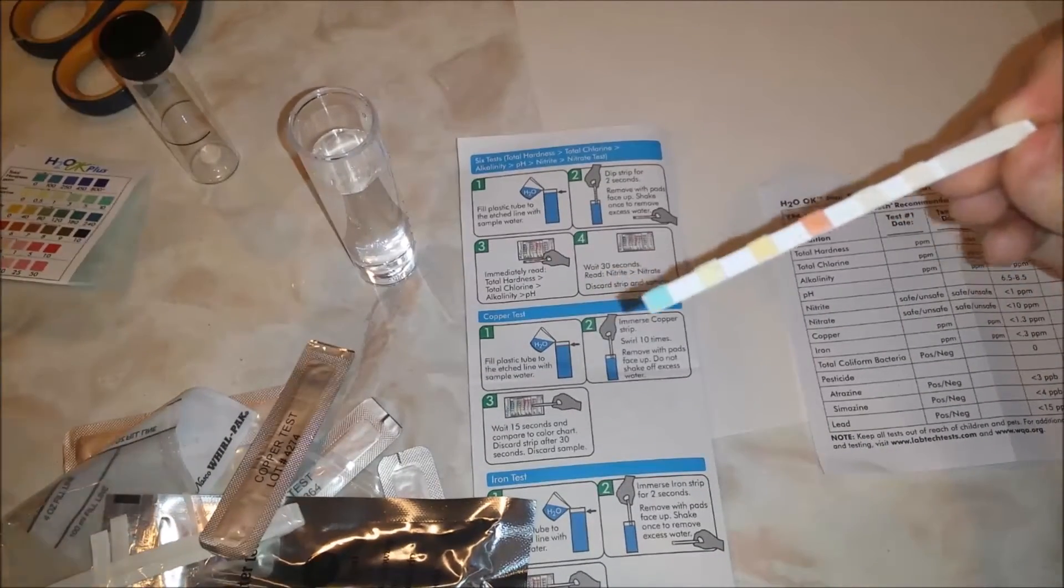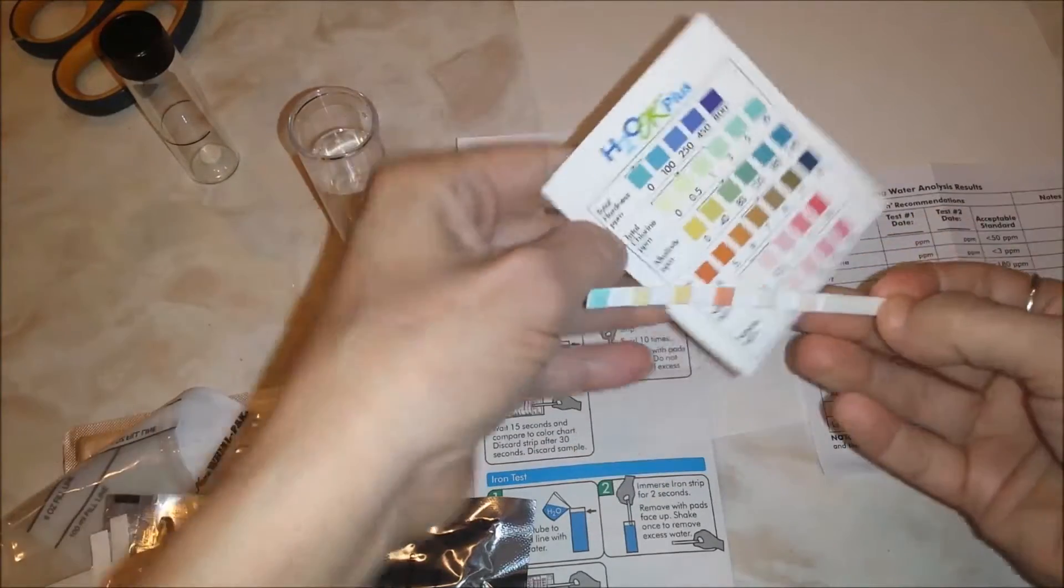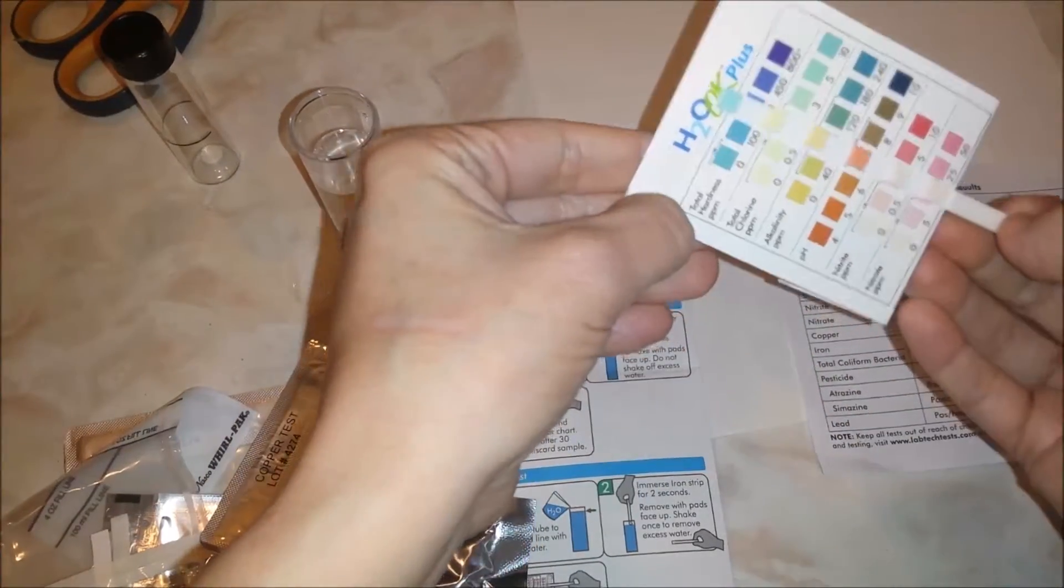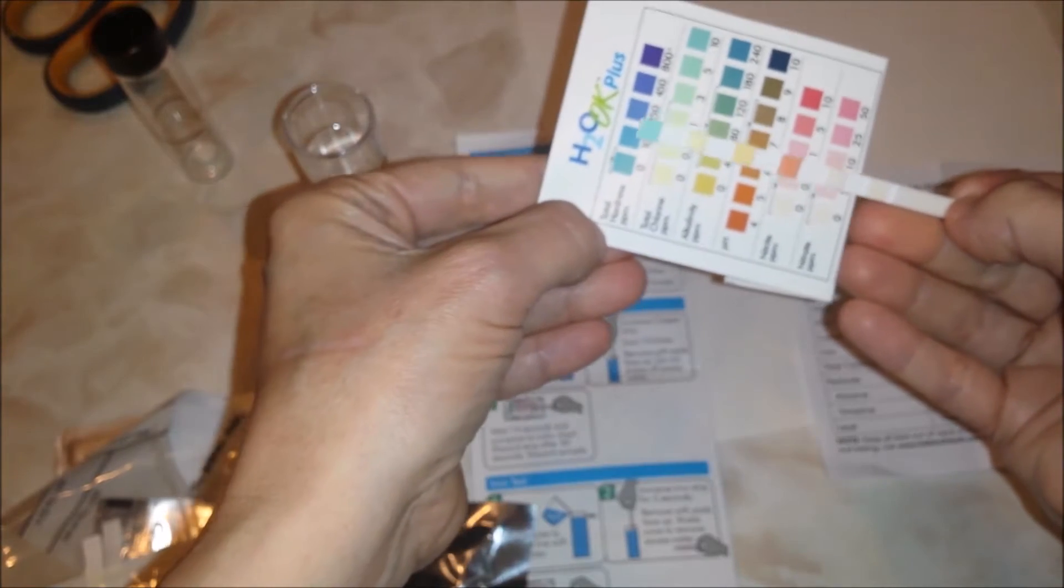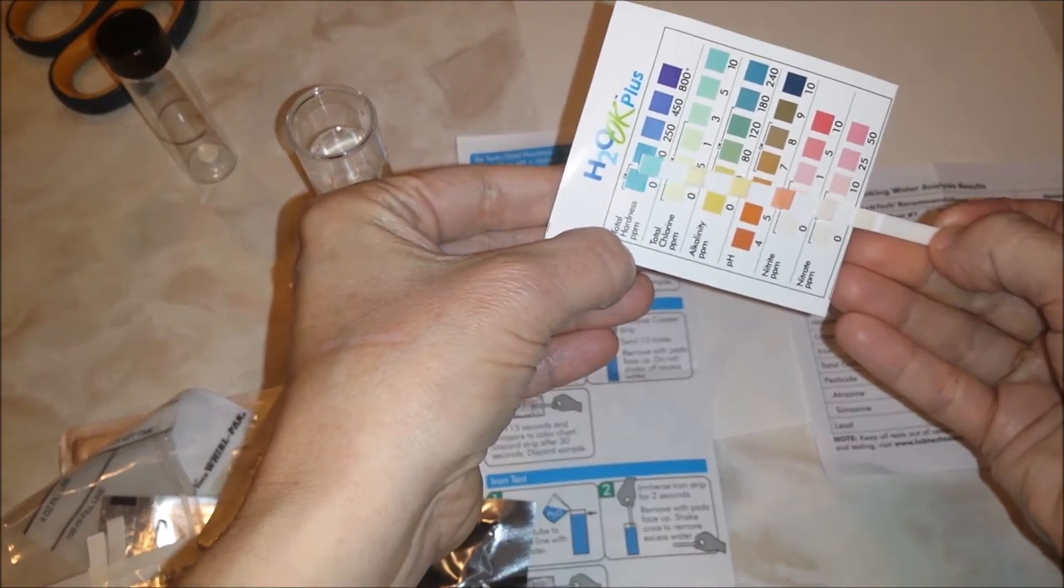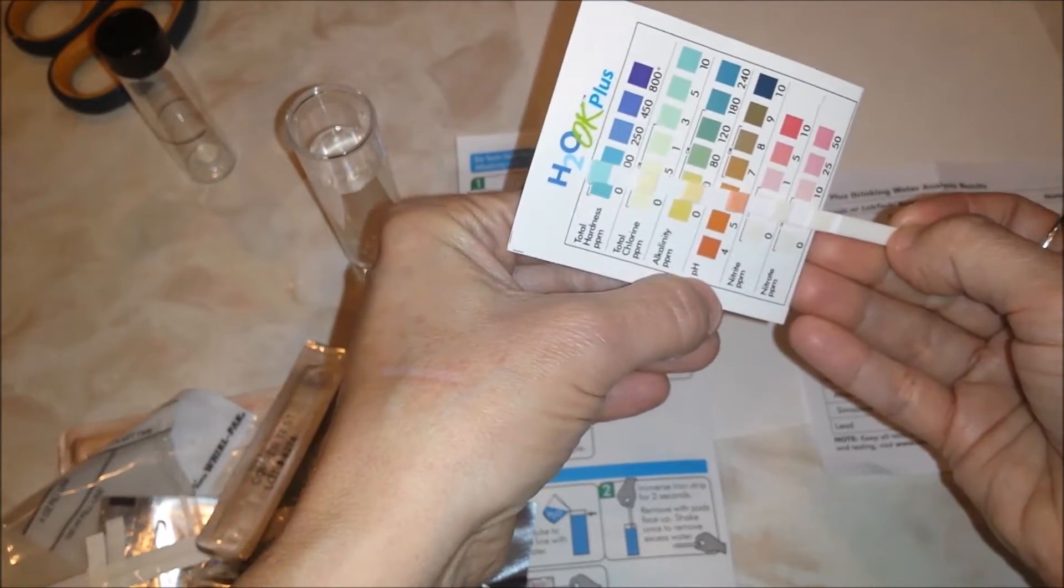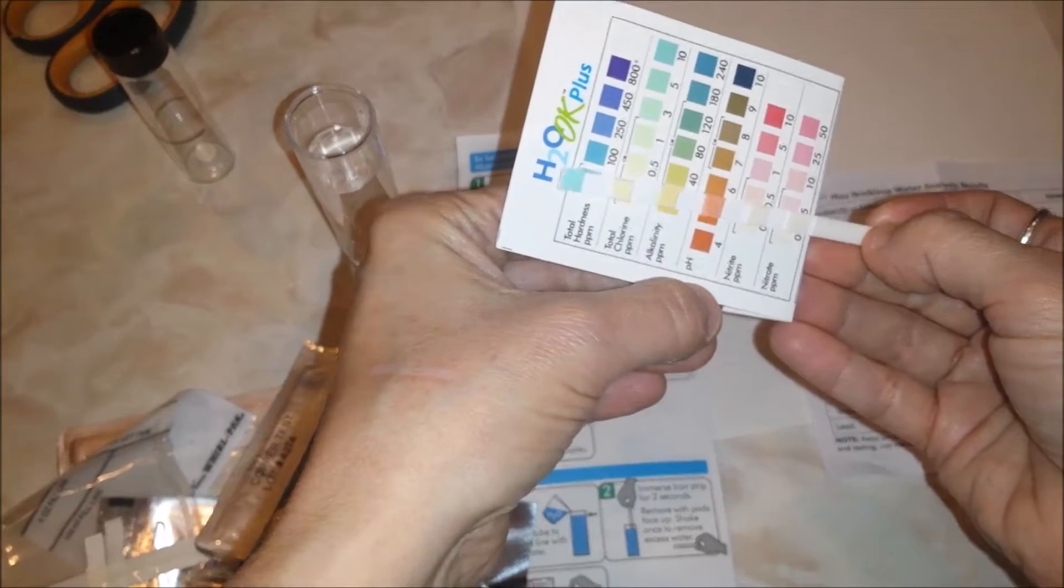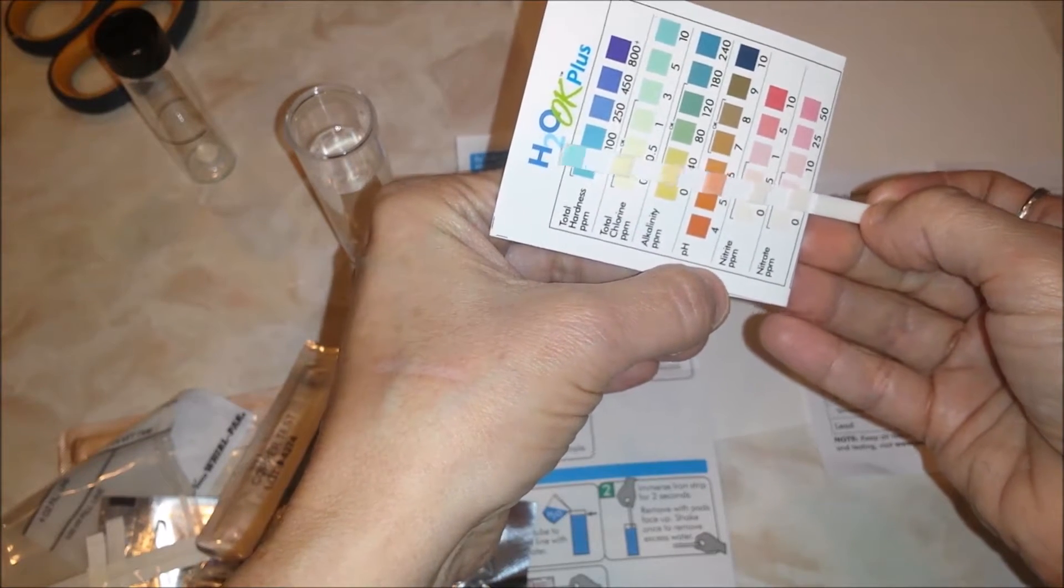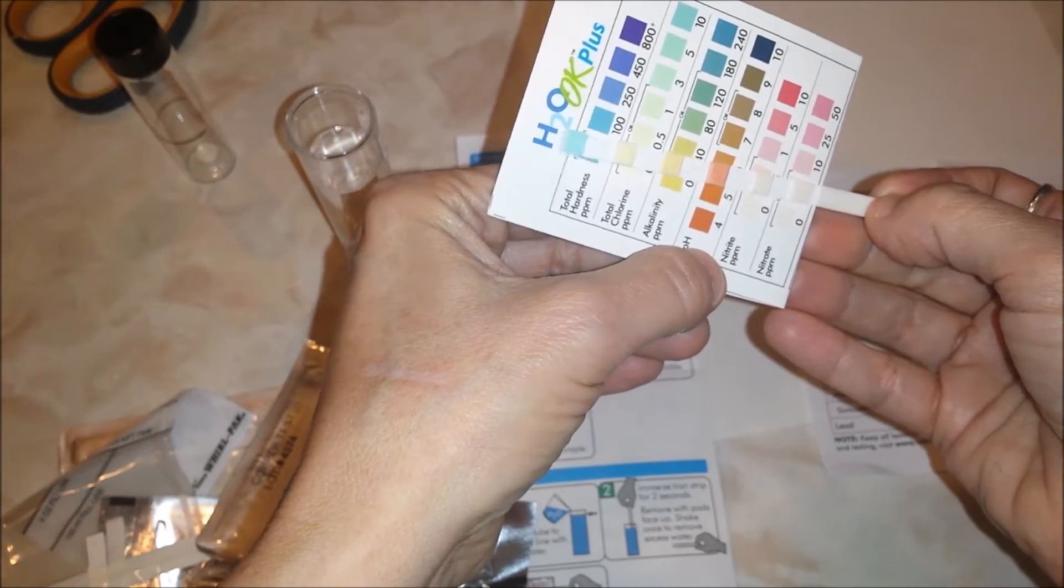Now here's our measurement guide. I folded it so these are the six we're going to test for. Note the initial pad color matches the lowest. So hardness is the light blue, chlorine is the yellow, alkalinity is sort of a mustardy color, pH is sort of rusty. Nitrite and nitrate are sort of white by default.